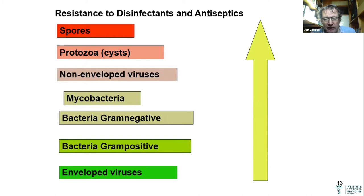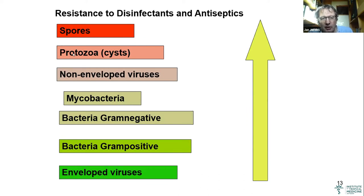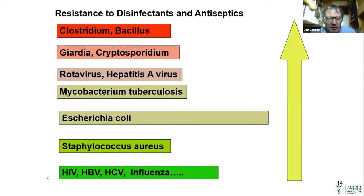Gram-positive bacteria and gram-negative bacteria are increasingly resistant. Mycobacteria are more resistant, then non-enveloped viruses, protozoa such as Giardia, and spores — Bacillus and Clostridium — are very resistant. Translating to specific organisms: HIV and enveloped viruses are most susceptible, then Staphylococcus, E. coli, Mycobacterium tuberculosis, Rotavirus, Norovirus, Giardia, Cryptosporidium, Neoclostridium, and Bacillus are progressively more resistant.